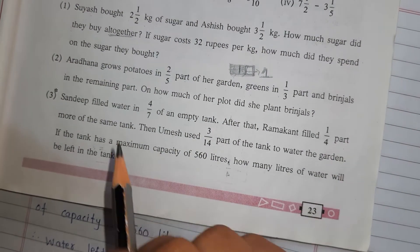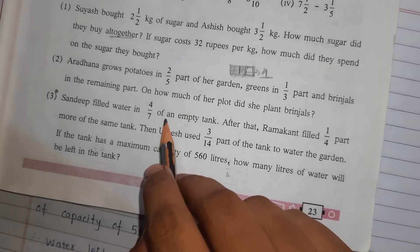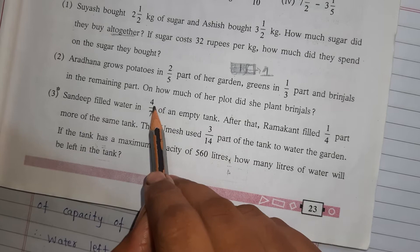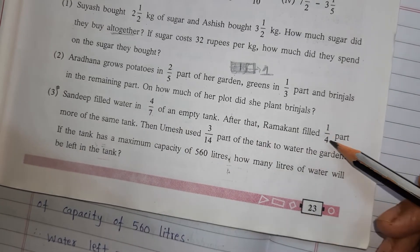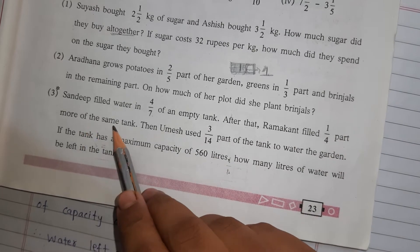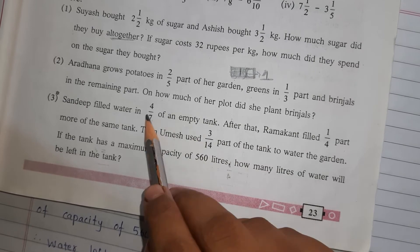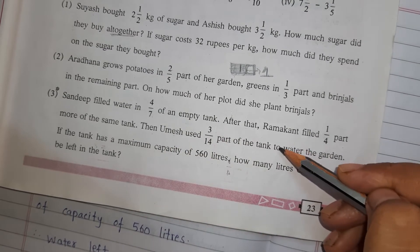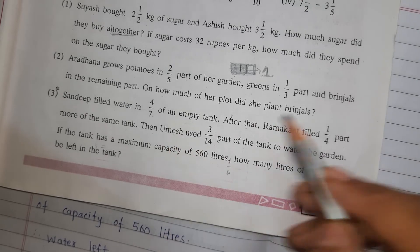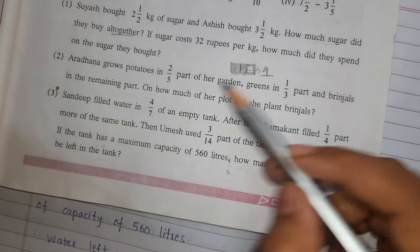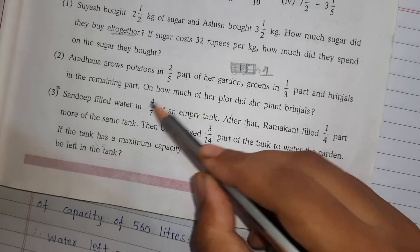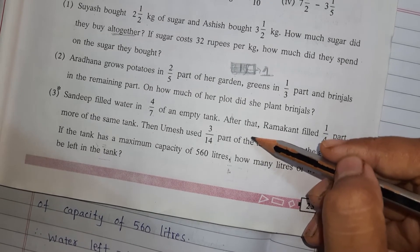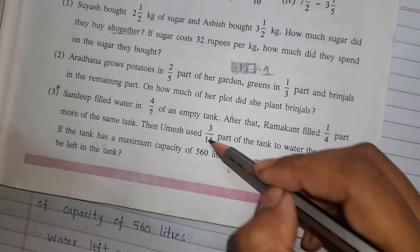Third example is Sandeep filled water in 4/7 of an empty tank. Okay. There is an empty tank of water and in that tank Sandeep filled 4/7 part. After that Ramakant filled 1/4 part more of the same tank. So they have added water in the tank means we have to do addition of these two numbers. Then Umesh used 3/14 part of the tank to water the garden. So first we will add these two numbers. After that Umesh used the water means water got reduced from the tank means we have to do subtraction. So first addition and then subtraction.